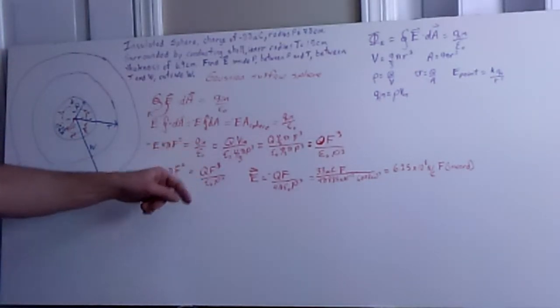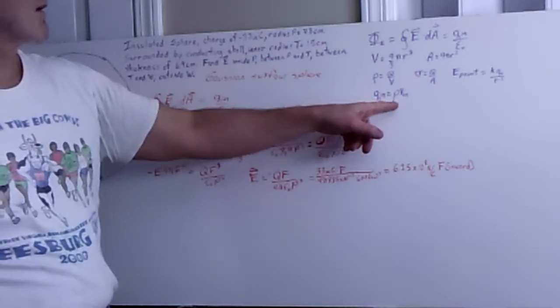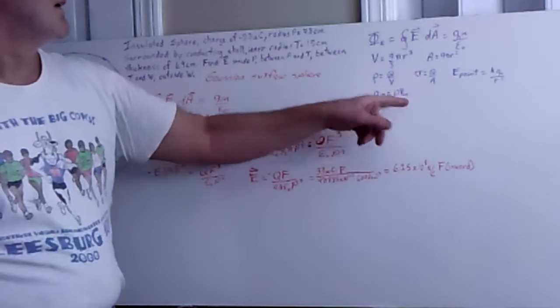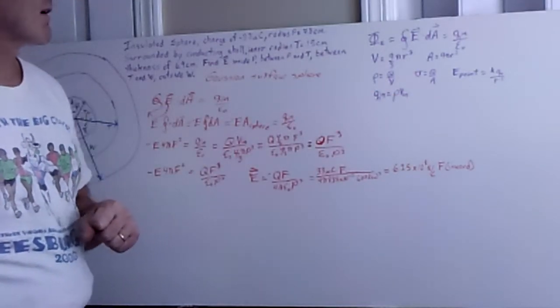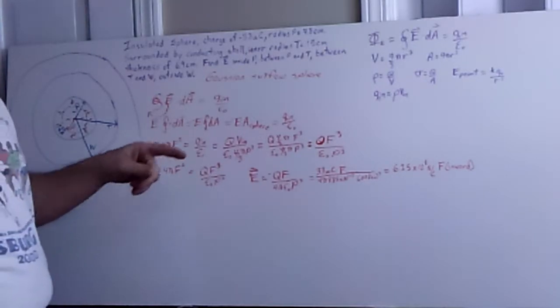So what is the q inside? That happens to be given by our equation here that says q inside is given by that charge density, times the volume of our sphere that's containing the charge. And so what do we do for that then?